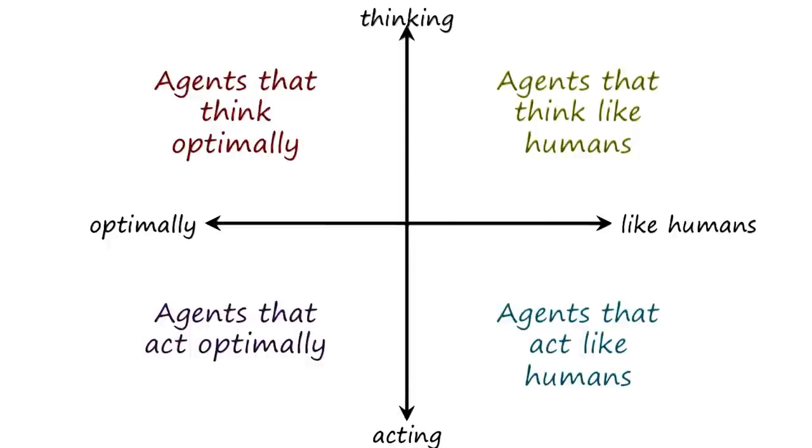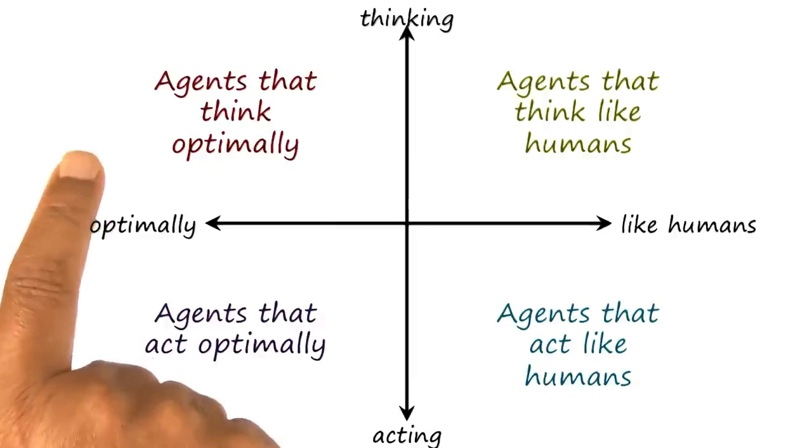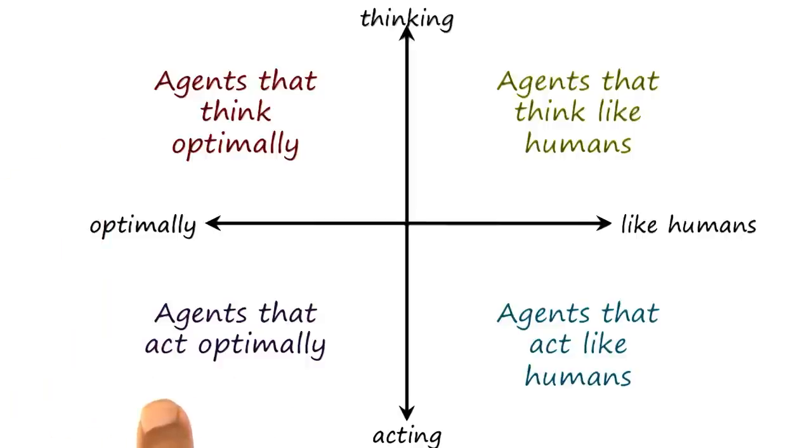Given these two axes, we get four quadrants. Starting from the top left and going counterclockwise, here are agents that think optimally, agents that act optimally, agents that act like humans, and agents that think like humans.